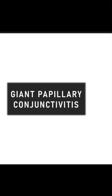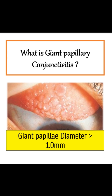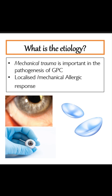Giant papillary conjunctivitis is an allergic inflammation of the conjunctiva associated with giant papillae formation. Giant papillae are papillae with a diameter greater than one millimeter. Papillae with a diameter between 0.3 millimeter and one millimeter are known as macro papillae, and they are also considered abnormal.